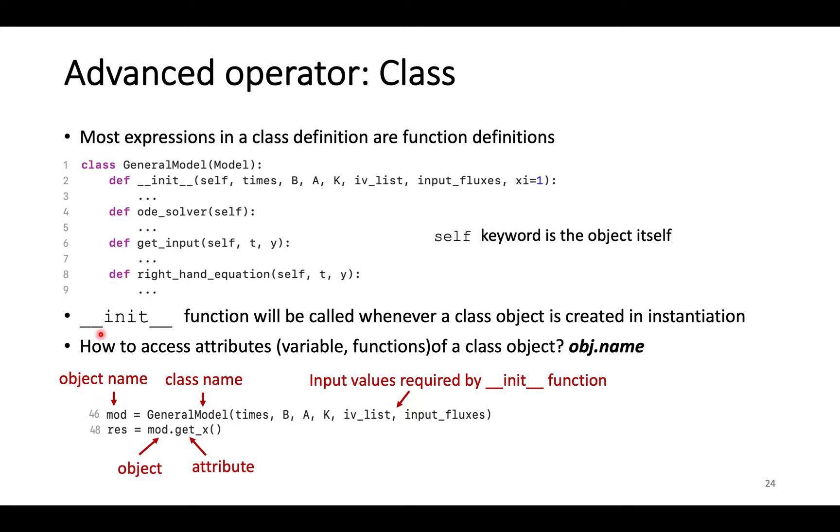When creating an object, Python will call a specific function named __init__. Here is a code example to initiate a general model object. The six parameters will be passed into the __init__ function here. The syntax to assign attributes of a class object is the object name attached by the attribute name, such as the code example here in line 48.